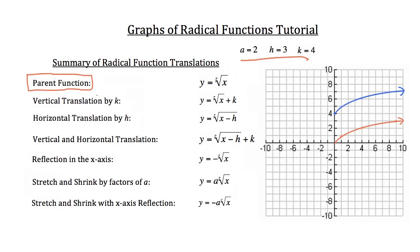You can see the vertical translation by k — which we know is 4 — has just shifted the graph vertically up 4, but it looks identical otherwise since we haven't changed the stretch or shrink factor at all. I'll box this in blue so you can remember that detail. Now let's look at the horizontal translation by h. Written in green, the horizontal translation by h equals 3 shifted the graph horizontally 3 units to the right, without affecting the stretch or shrink.